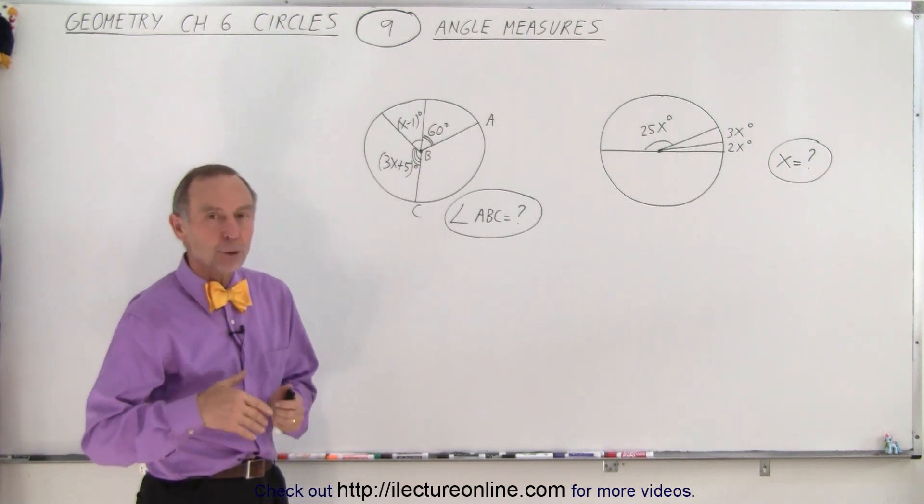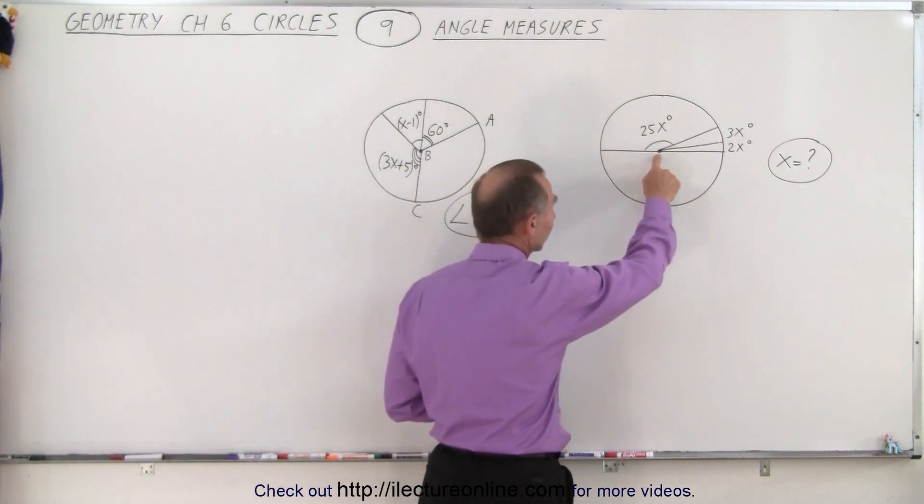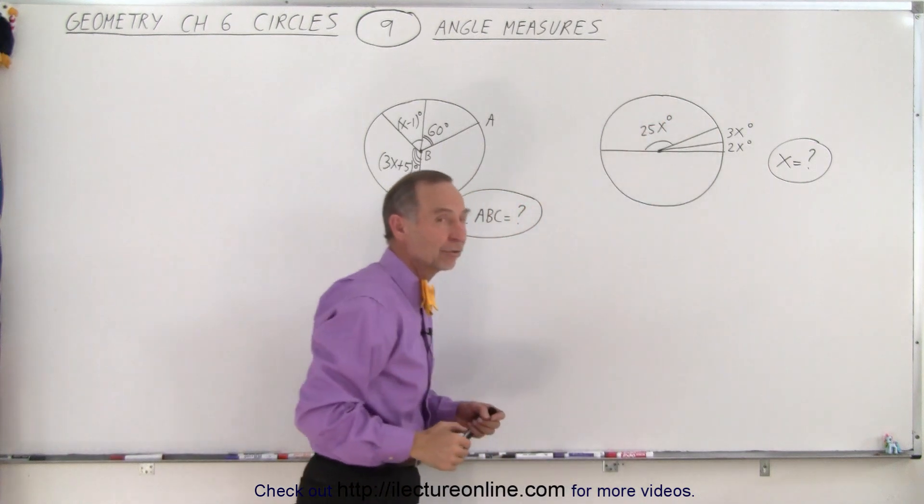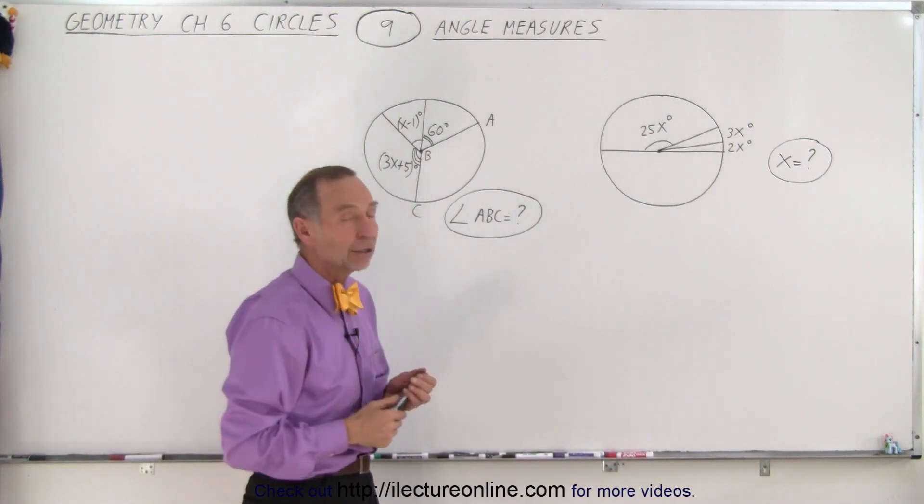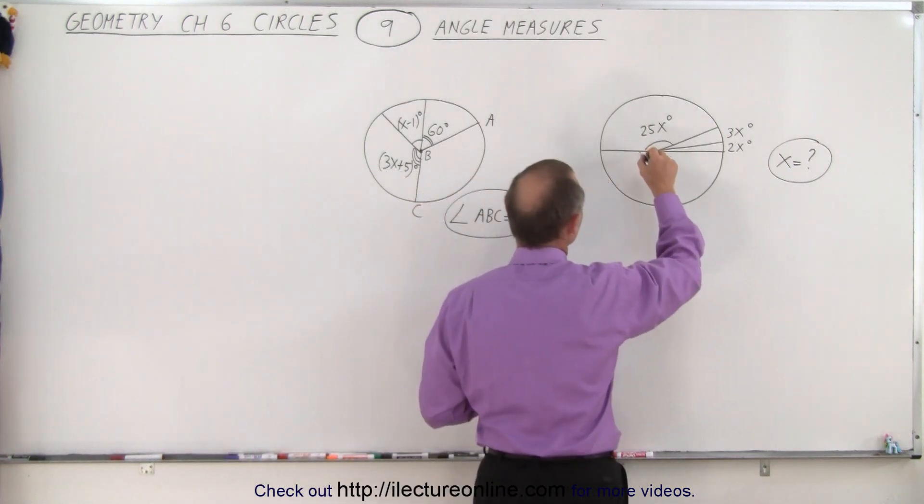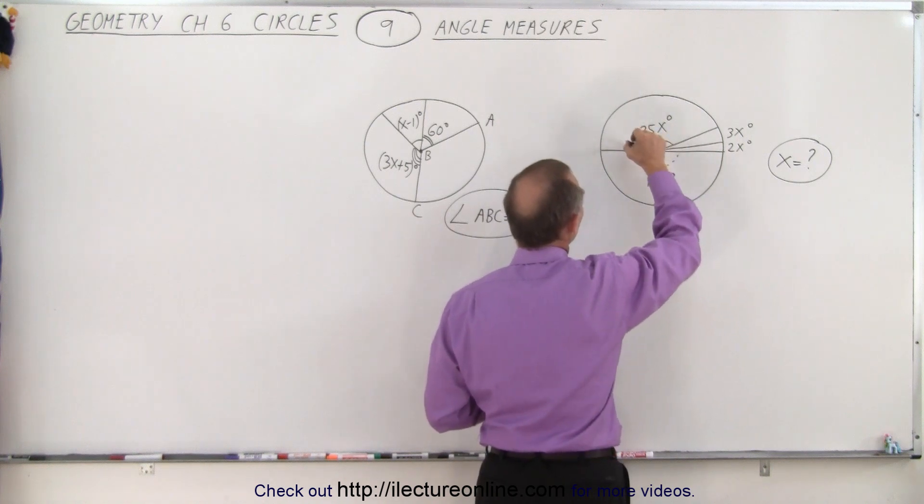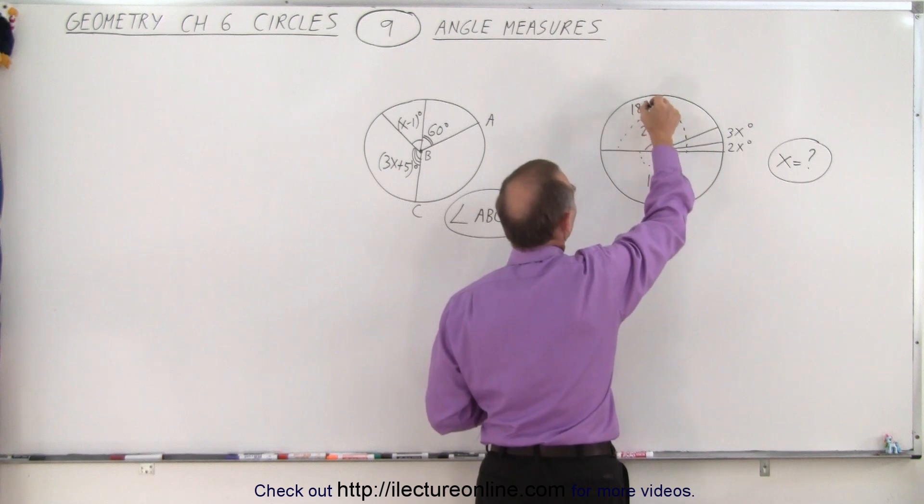Whenever we can find a chord which is the diameter, in other words a chord that goes right through the center of the circle, that means that the circle is divided into equal halves, which means that each half will subtend an angle of 180 degrees. This angle right here will be 180 degrees and this angle right here will also be 180 degrees.